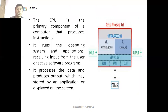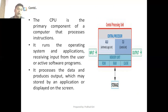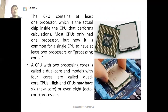The CPU is the primary component of a computer that processes instructions. It runs the operating system and applications, receiving input from the user via active software programs, processes the data, and produces output which may be stored by an application or displayed on the screen. Once the user gives instructions to the computer, all those instructions are processed by the CPU with its three units and the result is displayed to the user or stored in the storage device. The CPU contains at least one processor, which is the actual chip inside the CPU that performs calculations.